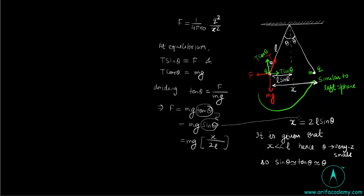It is from this equation. Now put the value of F, k q square by x square. k is here 1 upon 4 pi epsilon naught.